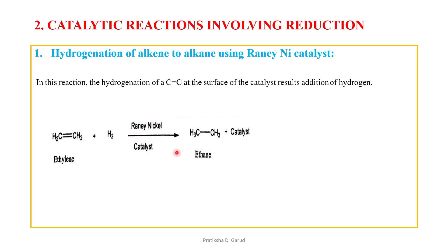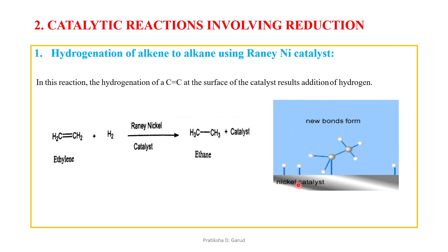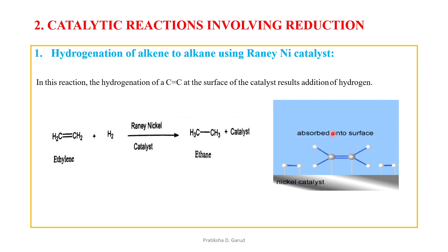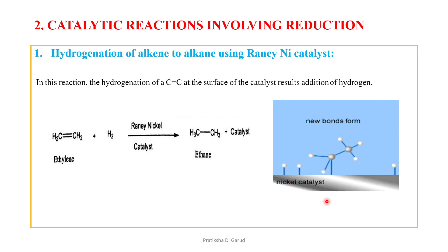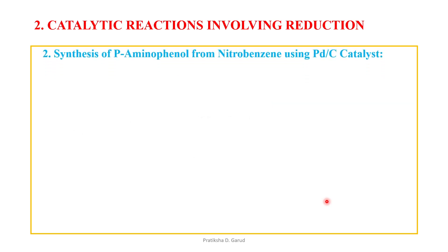In the mechanism illustrated by video: the nickel catalyst at the bottom has hydrogen atoms adsorbed on it. The ethylene molecule approaches, and hydrogen atoms are inserted one by one at the two carbon atoms, converting the double bond into a single bond. The ethane molecule then leaves the surface. This is the simple mechanism for hydrogenation of alkene using Raney nickel.